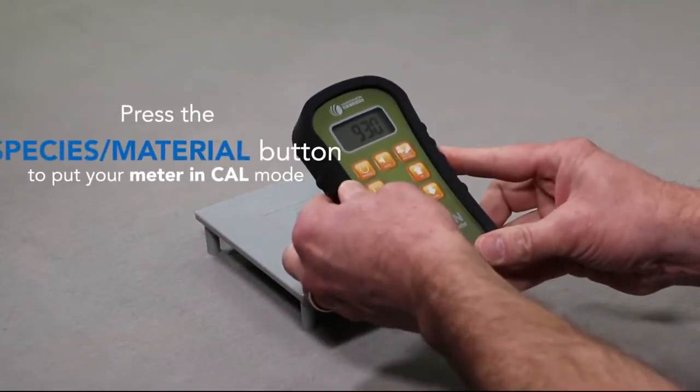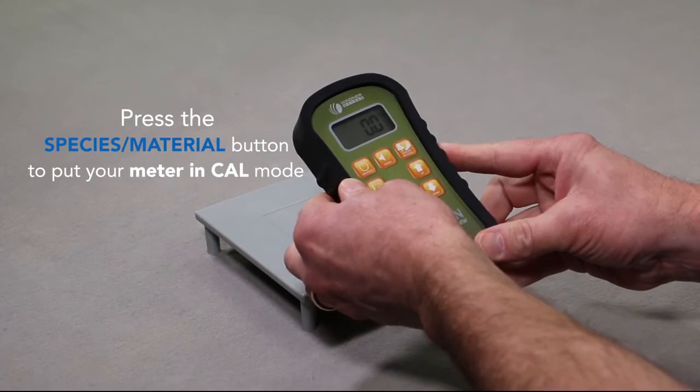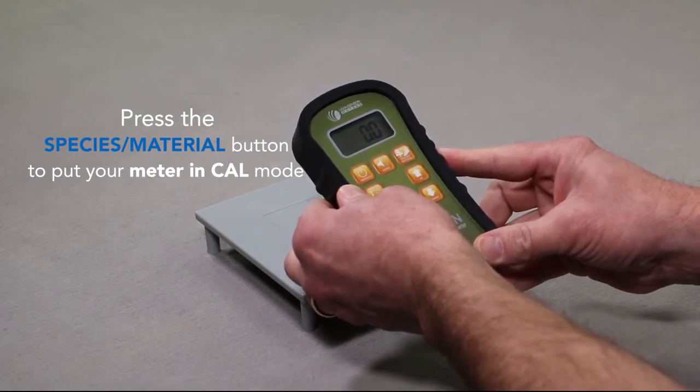Turn the meter on and use the species material button to put your meter in calibration mode.